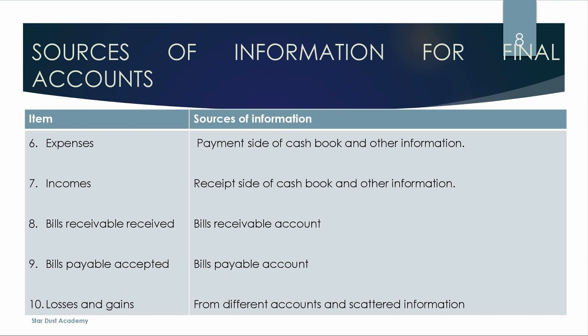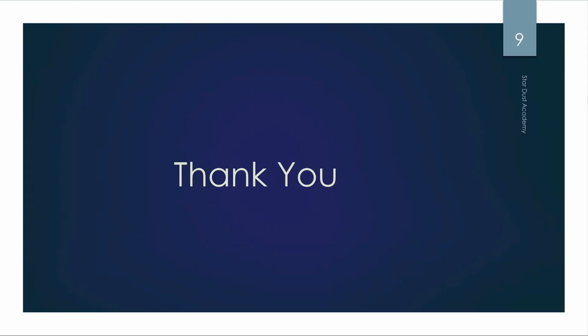We have information that comes from the loss and gains. We will check the accounts from the loss from the sale of assets. If we don't know the asset, we will prepare the asset account. If there is a profit on the sale of assets, we will check the accounts and collect additional information from the scattered information. We will do the balance sheet in the conversion method. We will check the conversion method and final accounts method.